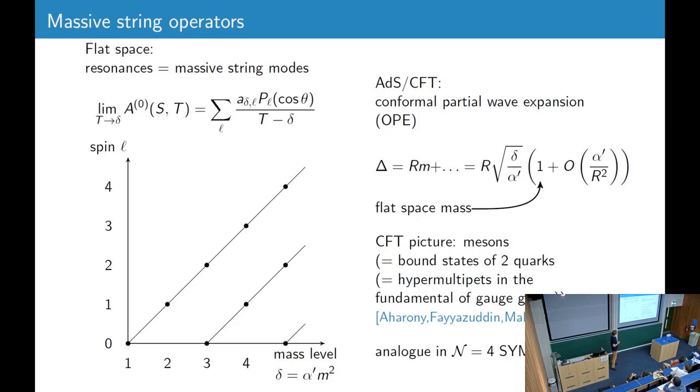In AdS-CFT, the analogous concept would be the conformal partial wave expansion. And for large radius, we should get back the flat space string spectrum. So at large R, we get just the masses here, so we can express it like this in terms of the mass levels. And then we get these curvature corrections to the dimensions.